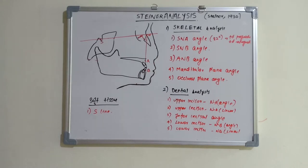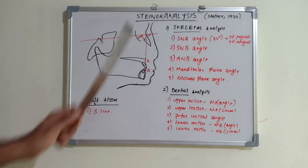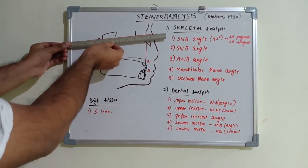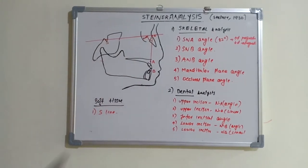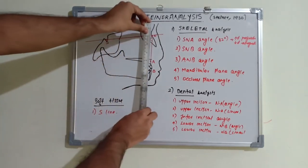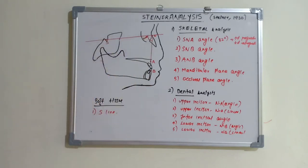In Down's analysis, the basic plane was the FH plane - the porion-orbitale plane. But in Steiner's analysis, he used the SN plane, that is the sella turcica and nasion plane. The SNA angle is formed between the sella-nasion plane and point A, giving the angle between S, N, and A, which is 82 degrees.